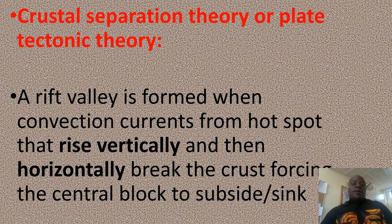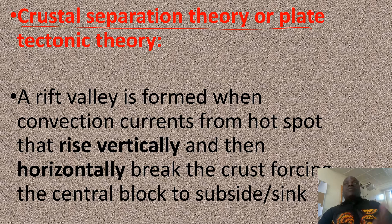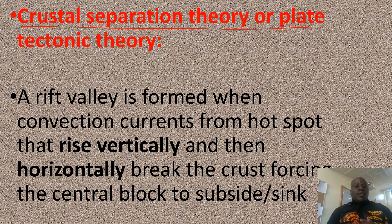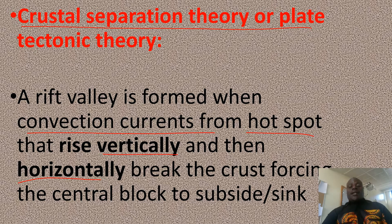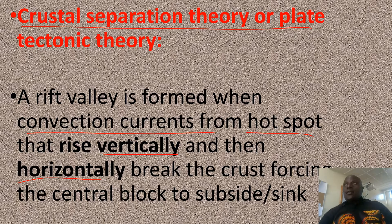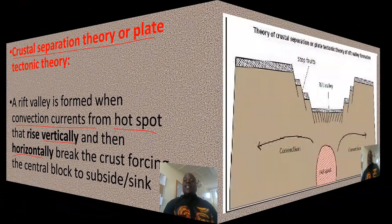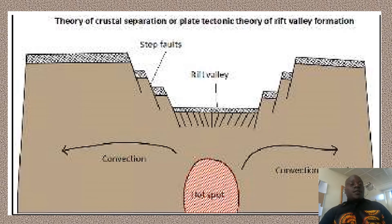Then crust separation theory. This has a relationship with continental drift and tectonic movements. So how does this lead to the formation of a rift valley? It comes as a result of convection currents from hot spots that rise vertically and horizontally. And this breaks all forces on the crust, especially the central block, causing it to sink. And after sinking, the part that moves down forms a rift valley.